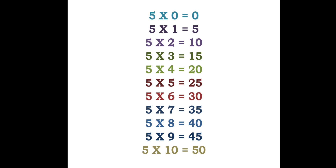Let's revise this once again. 5 zeros are 0, 5 ones are 5, 5 twos are 10, 5 threes are 15, 5 fours are 20, 5 fives are 25, 5 sixes are 30, 5 sevens are 35, 5 eights are 40, 5 nines are 45, 5 tens are 50.